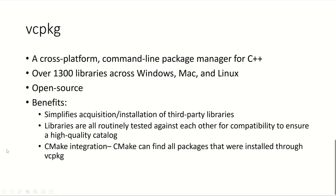We just successfully built and run SuperTux in VS Code using the CMake Tools extension. Those are the general steps for configuring a CMake project in VS Code. Now let's look at how we integrated vcpkg with CMake Tools to manage all of SuperTux's dependencies. vcpkg is a cross-platform command-line package manager for C++. There are over 1,300 libraries supported in the vcpkg catalog across Windows, Mac, and Linux.